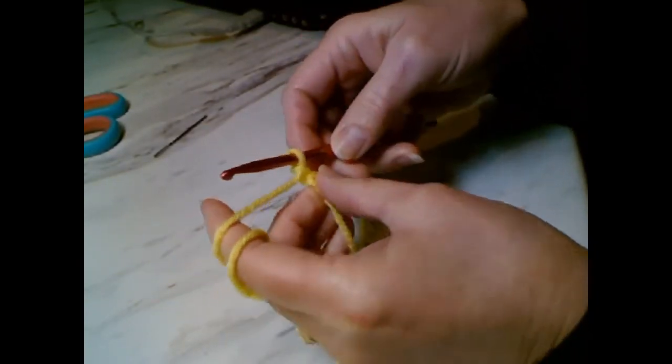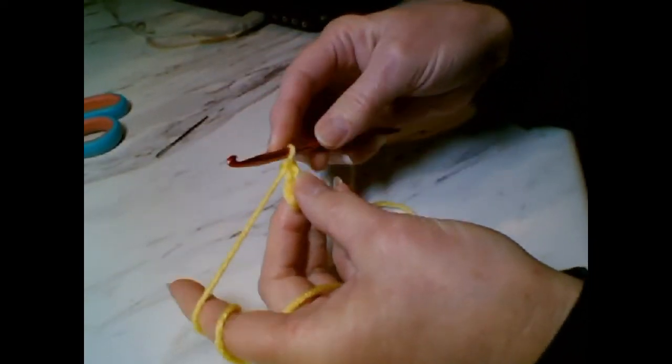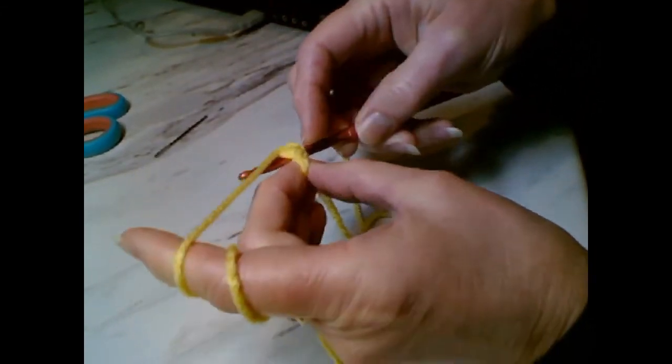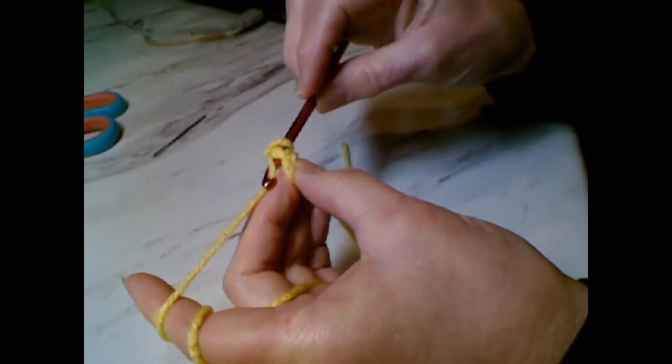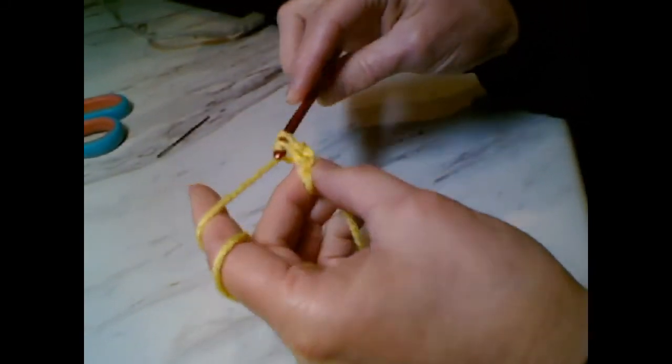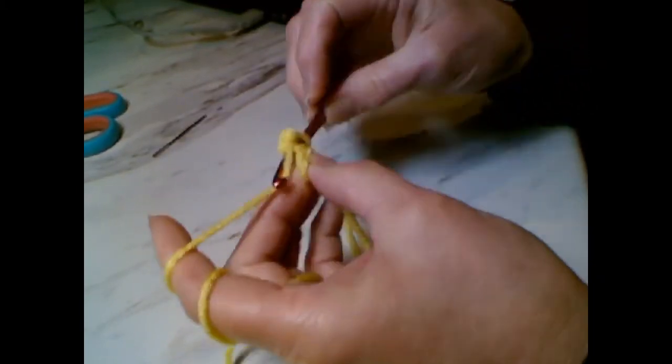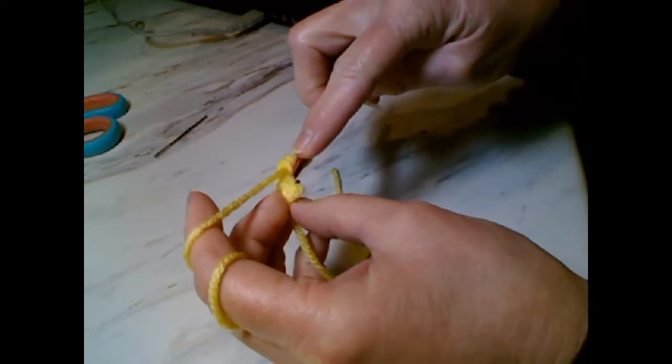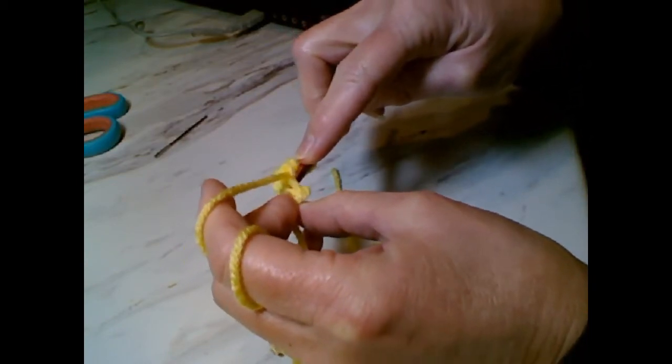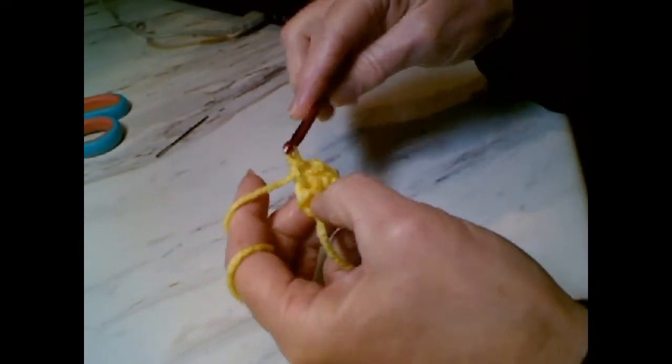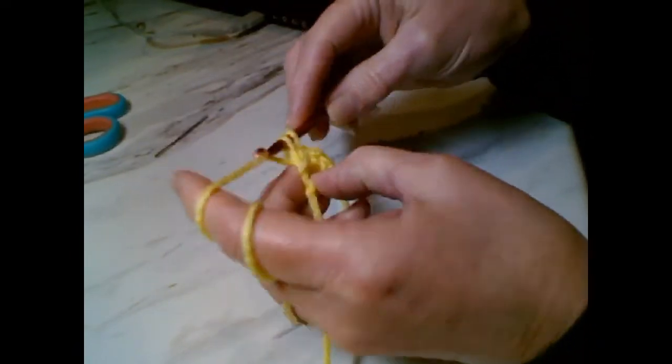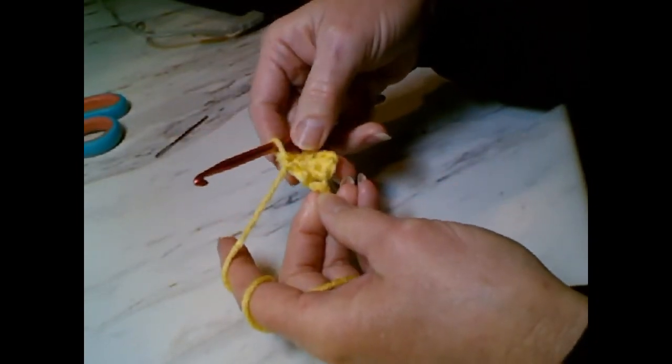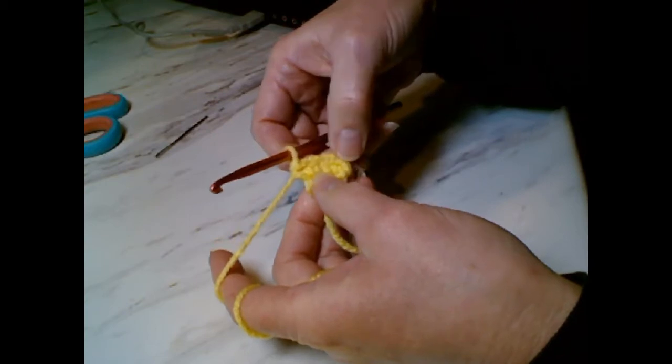Chain one and turn your work. Now in the very first stitch of that row that you just made, you're going to make two single crochets in the same stitch. Moving to the second stitch of that row, go underneath your V's and make two more single crochets. If you take a look at this, it's almost like this is the point of the beak right here with row one and row two.